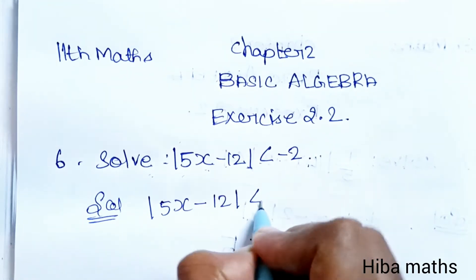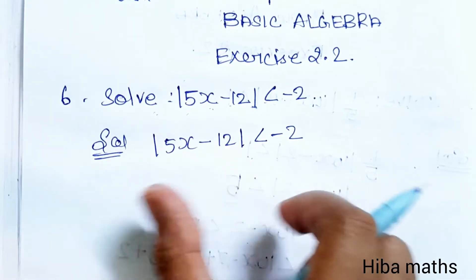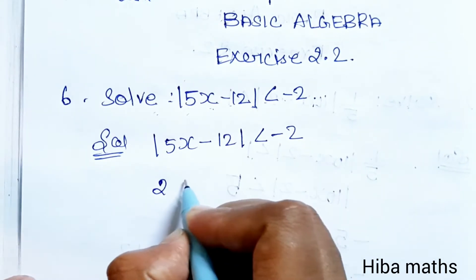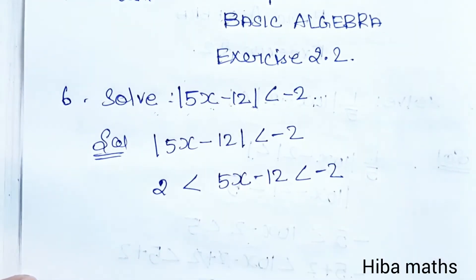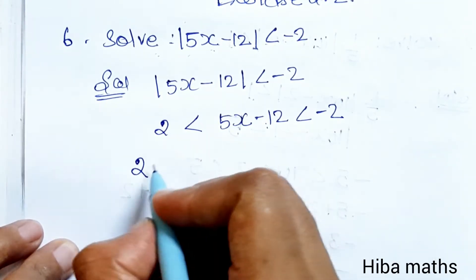We start with |5x-12| < -2. To remove the modulus, we work with: 2 < 5x-12 < -2. In the same way, we will add to both sides. 2 < 5x-12 < -2+12, so 2+12 < 5x.